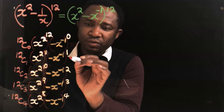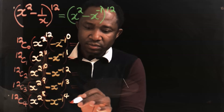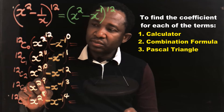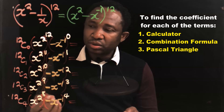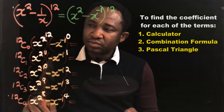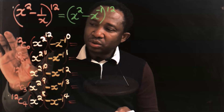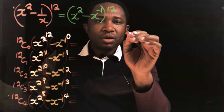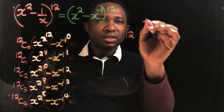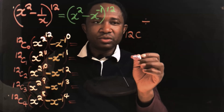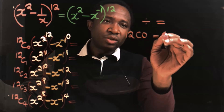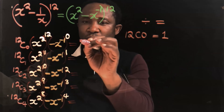Next, we are going to solve for the coefficients for each of the terms, either by using your calculator, the combination formula, or the Pascal triangle. To use your calculator, you press 12, then shift or second function divide. You will see C on your calculator. Then type 0, press equals, and you are going to get 1. So we have 1 here.